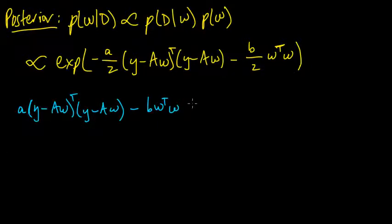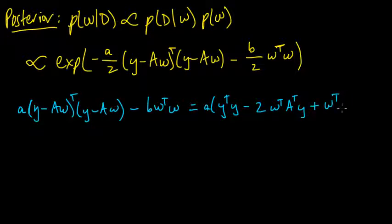And let's multiply this part out. So this just becomes a y transpose y minus two w transpose A transpose y, w transpose A transpose y, plus w transpose A transpose A w.